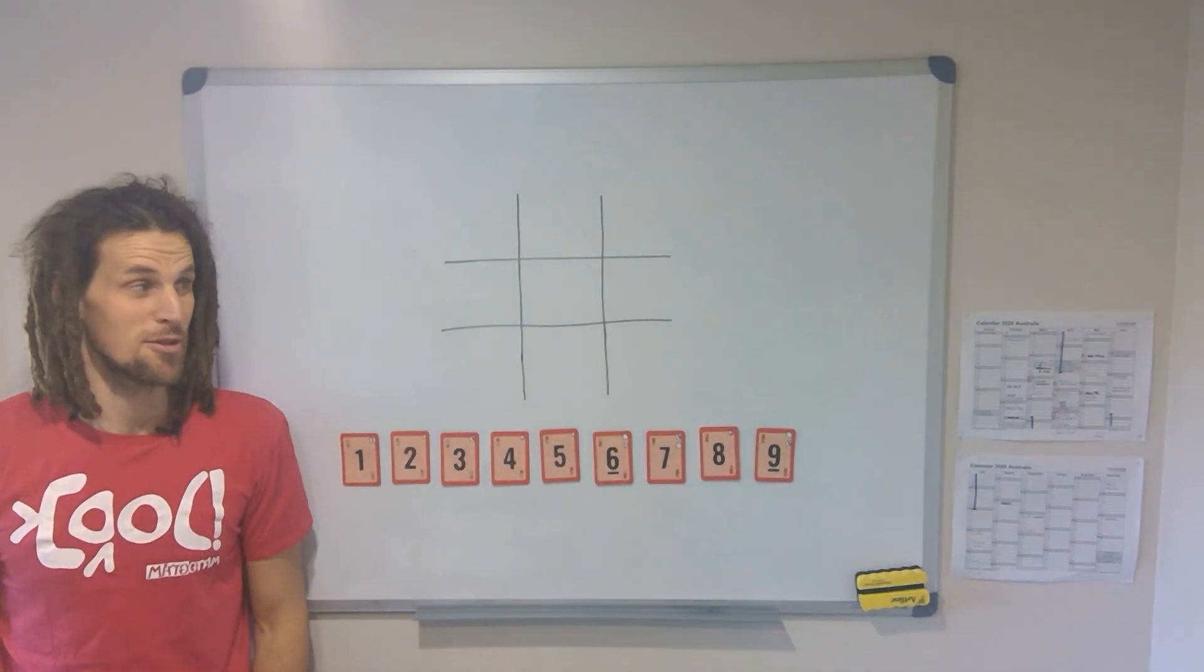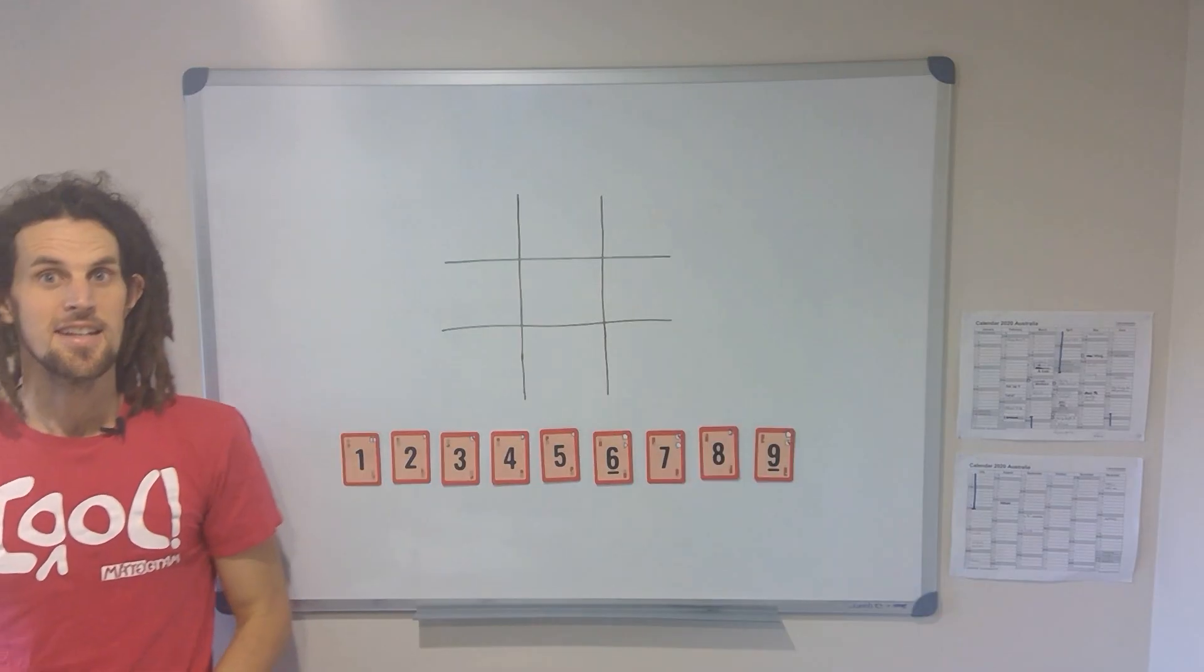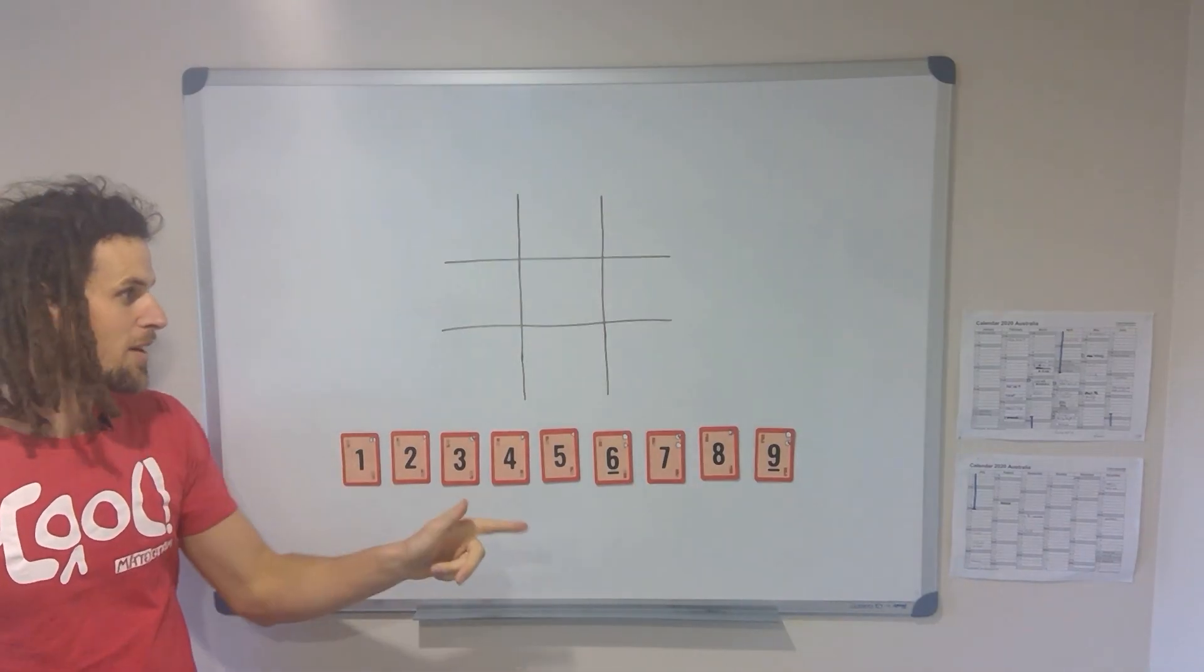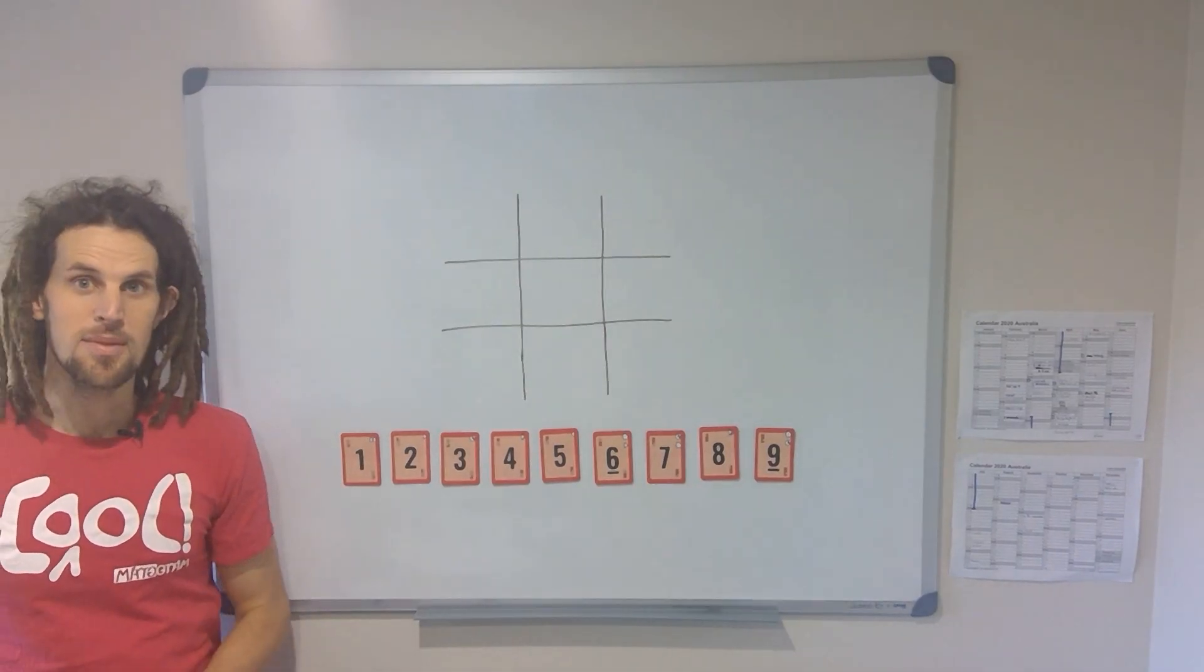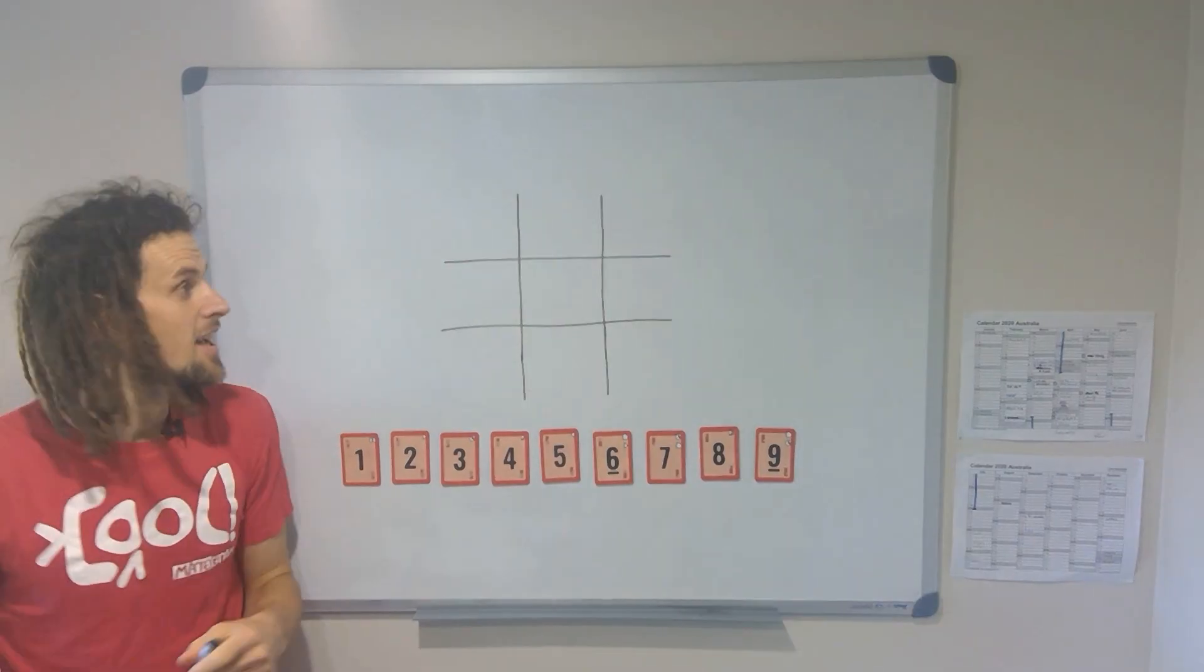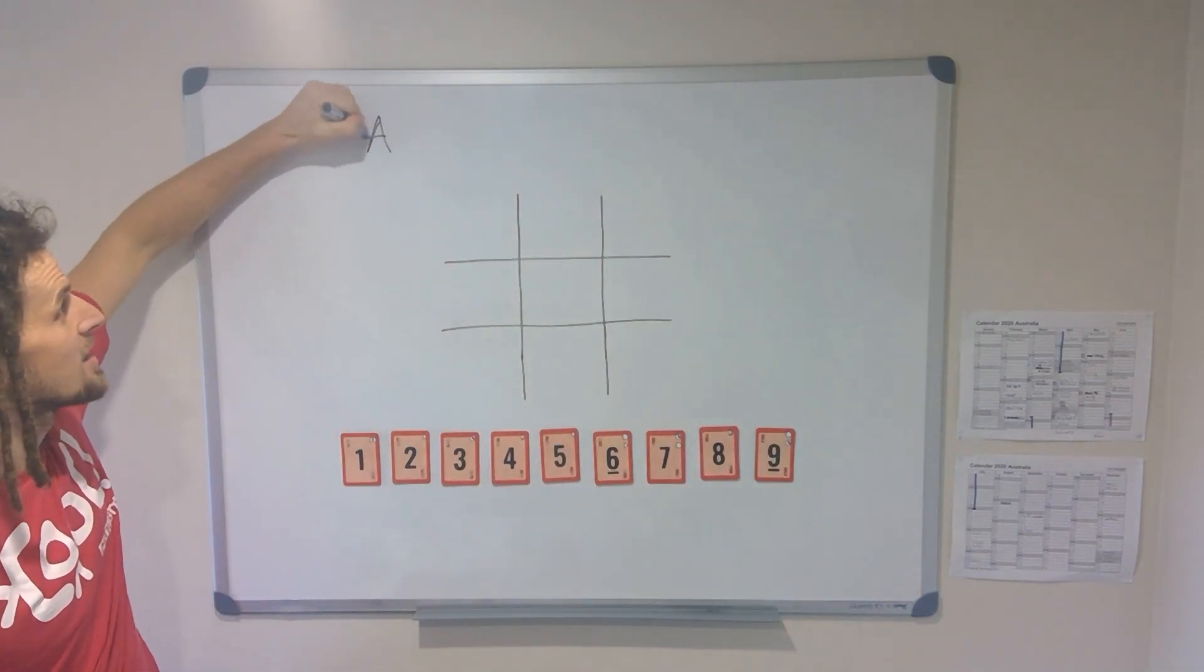But seriously, it's really cool. Here's how it works: you've got the numbers one through nine and you can put them in these places once each, and the aim for the attacker is to get a total of 15.